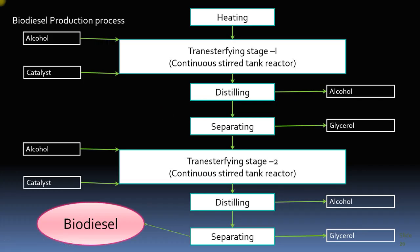In addition to transesterification, when producing biodiesel you may need some pre-treatment of the feedstock. After transesterification, distillation is carried out to remove alcohols, which can be recirculated. The byproduct glycerol is then separated. To reach the desired properties of biodiesel, you may need to repeat transesterification and distillation steps before finally obtaining the desired biodiesel product.